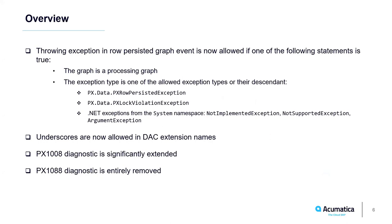We also allow three common .NET exception types: NotImplementedException, NotSupportedException, and ArgumentException, and exception types derived from them. Underscores are now allowed in DAC extension names, though you still can't use them for names of DACs and DAC fields. We significantly extended the PX1008 diagnostic that checks long-run delegates for captured graph references, which made the previous PX1034 diagnostic redundant — therefore we removed it.